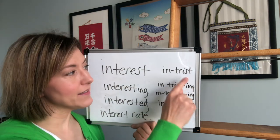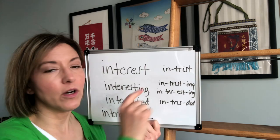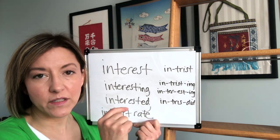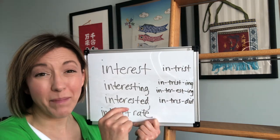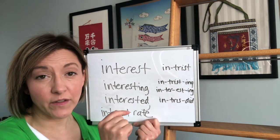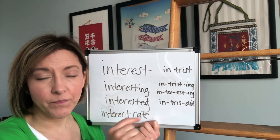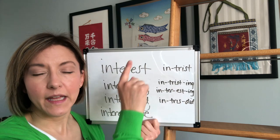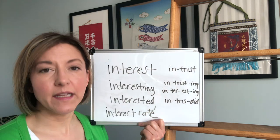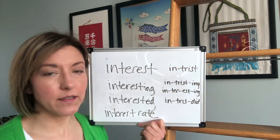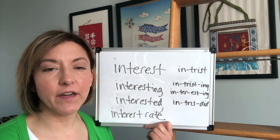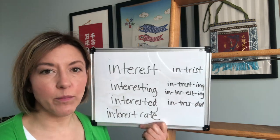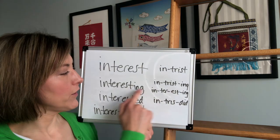Then touch the tip of the tongue to the back of the top front teeth for that final T — 'interest, interest, interest'. That's where people can get a little confused with the variations.